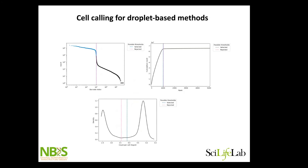The next issue with droplet-based methods is that you load cells with the aim of getting a certain number of libraries. Most of the droplets in your 10x machine will be empty, because if you fill it up too much you'll have a lot of doublets and triplets. So you have to stay at a reasonable level. Tools define what they believe to be an empty droplet versus a cell by ranking barcodes based on number of UMIs — all of these curves are more or less similar.